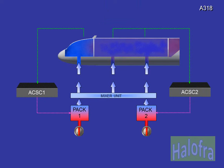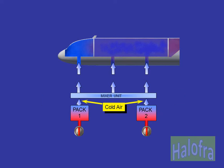ACSC 1 monitors the temperatures of the flight deck zone and controls the air temperature delivered by pack 1. ACSC 2 monitors the temperatures of the forward and aft cabins and controls the air temperature delivered by pack 2. Normally, cold air is delivered by the packs and is then sent to the three zones via the mixer unit.